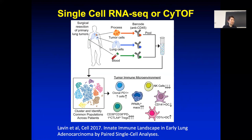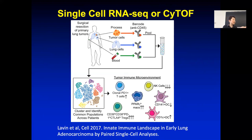You get an expression index matrix — a read count per gene. Then you run principal component analysis to get the major different components, and run T-SNE clustering to look at different clusters. From this study, they could figure out which cluster is T cell, which is CD8, CD4, macrophage, or dendritic cells. They could also compare what is happening between normal lung versus early lung cancer — what are the immune cell changes in the tissue.